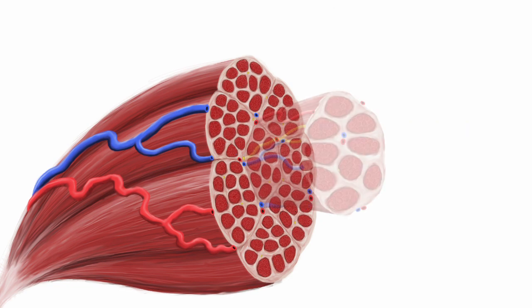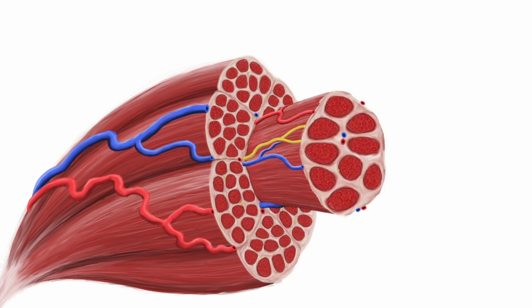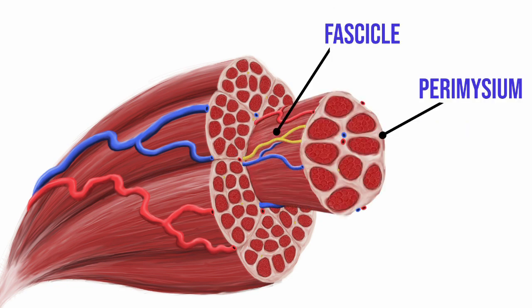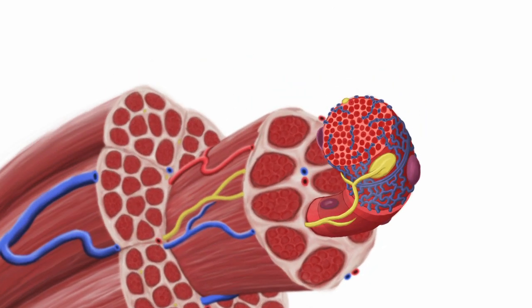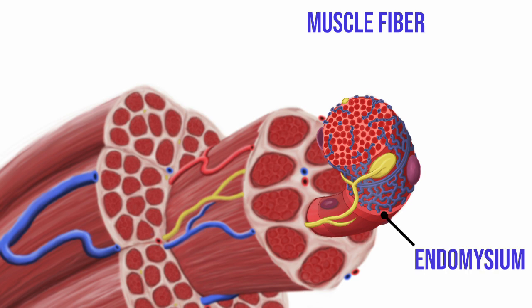When we take a closer look at a fascicle we can see more blood vessels and nerves as well as the next layer of connective tissue called the paramyceum and of course the muscle fibers themselves. Looking at just one muscle cell we can see it is a pretty complex structure. It is surrounded by yet another layer of connective tissue called the endomyceum.